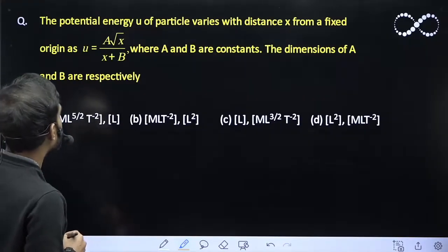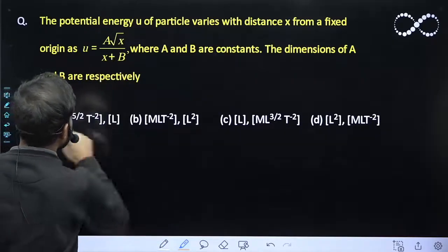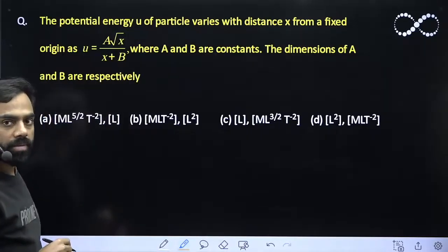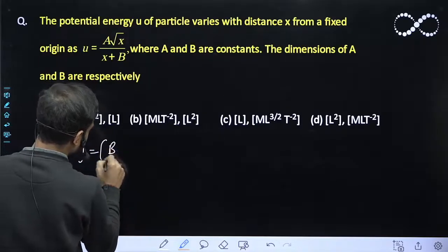You have to find the dimension of A and B. If you see here, x plus B is there in the denominator. As you know, same dimensions are added, so the dimension of x must be equal to dimension of B.